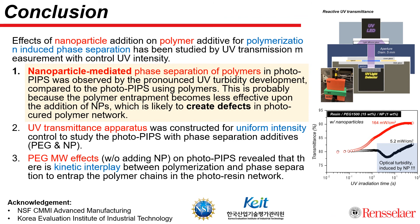In conclusion, we studied the effects of nanoparticle addition on polymer additives for photopolymerization-induced phase separation. The polymerization-induced phase separation of polymer additives was observed by UV turbidity development. The interaction between nanoparticles and polymer additives can change the polymerization-induced phase separation behaviors, giving a fundamental idea for the structural control of photocurable resin.